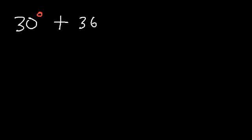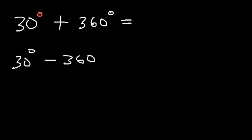Let's say you have the angle 30 degrees. How can you find the coterminal angle? Here's the quick way: you need to add 360 degrees and subtract 360 degrees from 30. So the positive coterminal angle is 30 plus 360, which is 390, and the negative coterminal angle is 30 minus 360, which is negative 330.